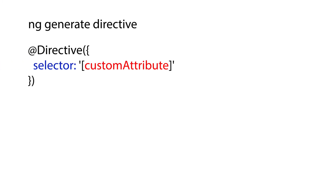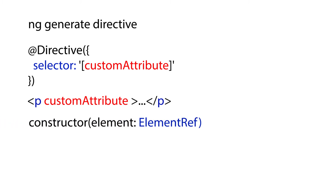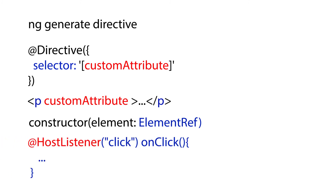Let's take a moment to recap what we have learned. We learned how to create an attribute directive using the ng generate directive command. We learned how to add an attribute directive to an element by taking the value of the selector property in the directive decorator and placing it in the opening tag of an element. We learned that Angular passes a reference of the element that we apply the attribute directive to in the constructor. We learned how to add events using the HostListener decorators. We also learned how to use the compact syntax to add the attribute to the element and insert a value at the same time.